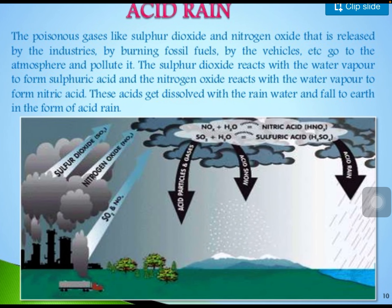Acid rain is another major harmful effect of air pollution. Poisonous gases like sulfur dioxide and nitrogen oxide, released by industries or by burning fossil fuels in vehicles, go into the atmosphere. Sulfur dioxide reacts with water vapor to form sulfuric acid, and nitrogen oxide reacts with water vapor to form nitric acid. These acids mix with rain water and fall to the earth as acid rain.